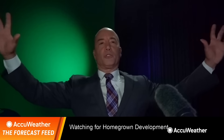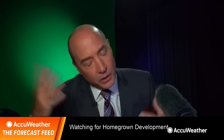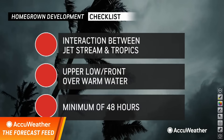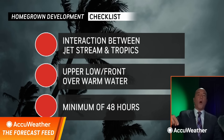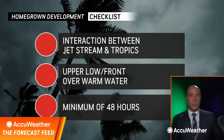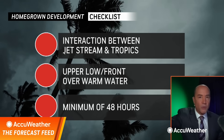I'm in my own little studio here for the forecast feed, where I break it all down and show you all of the tools that I use, or at least some of them, to make a forecast. I want to talk about homegrown development — we may get that this weekend. What is homegrown development? It is the interaction between the jet stream and the tropics. You usually see this during the early part of hurricane season, in June and July, and then in October and November.